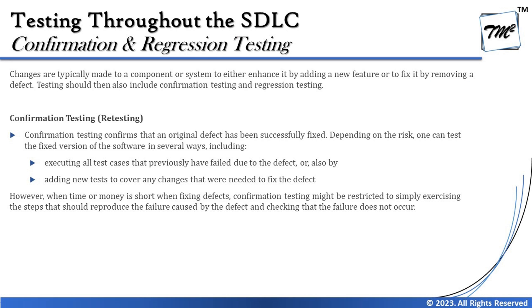Let's check what the syllabus says. Confirmation testing confirms that an original defect has been successfully fixed. Depending on the risk, one can test the fixed version in several ways — including executing all test cases that previously failed due to the defect, or adding new tests to cover any changes needed to fix it. This also reminds us of the pesticide paradox principle.